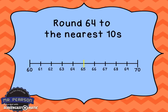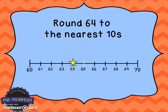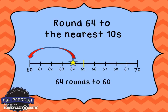Right now we're going to round 64 to the nearest tens. So we ask the question: what two tens is 64 between? We found out that 64 is between 60 and 70. So we made our number line, put 60 on one end, 70 on the other, and put in all the numbers in between — 61, 62, 63, 64, and so on. We found where 64 was on the number line and we know that 64 is closer to 60. So 64 rounds to 60.